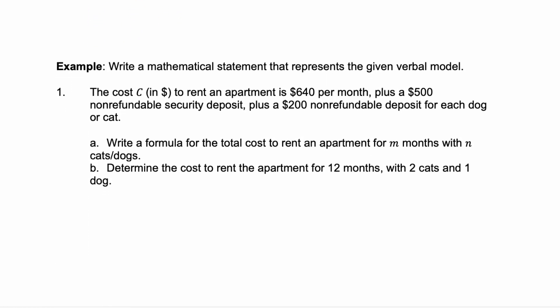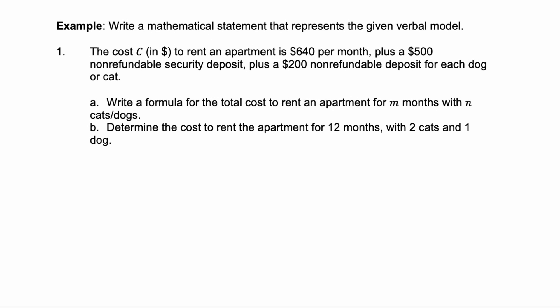Let's look at one that's a little more involved. Here we have to write a mathematical statement that represents the given verbal model. The cost C in dollars to rent an apartment is $640 per month plus a $500 non-refundable security deposit plus a $200 non-refundable deposit for each dog or cat. We have a couple clues here.